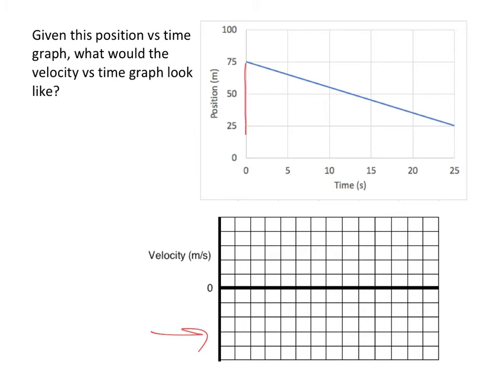So from here to here, the rise is negative 50. That's really a fall, but we'll say it's negative 50. The run all the way over is 25. So the slope is negative 50 over 25 or negative 2. So the velocity is negative 2 throughout.